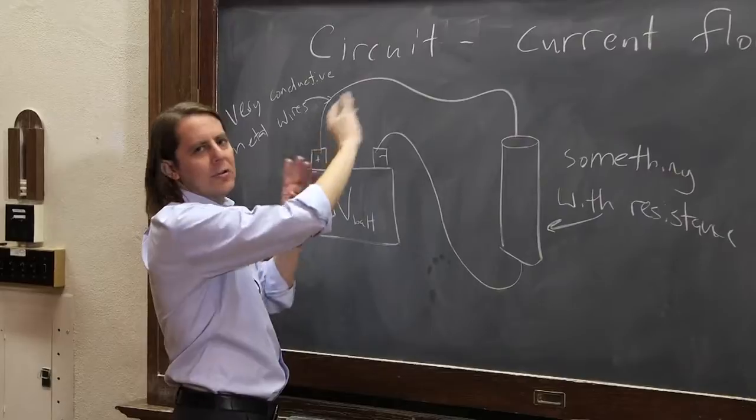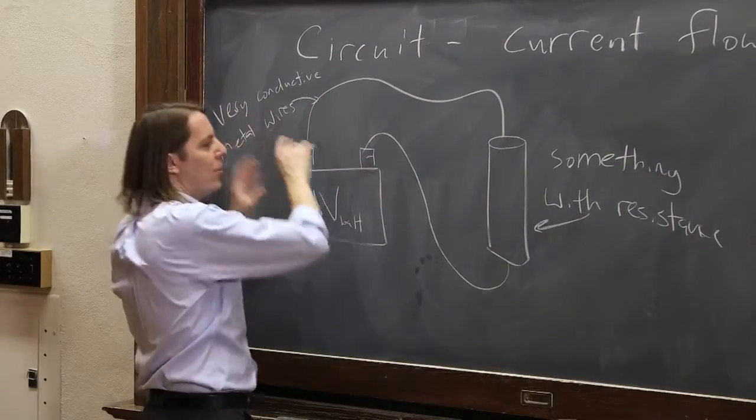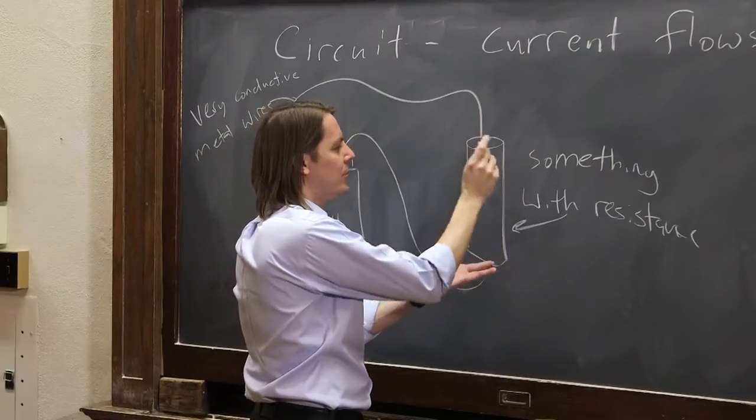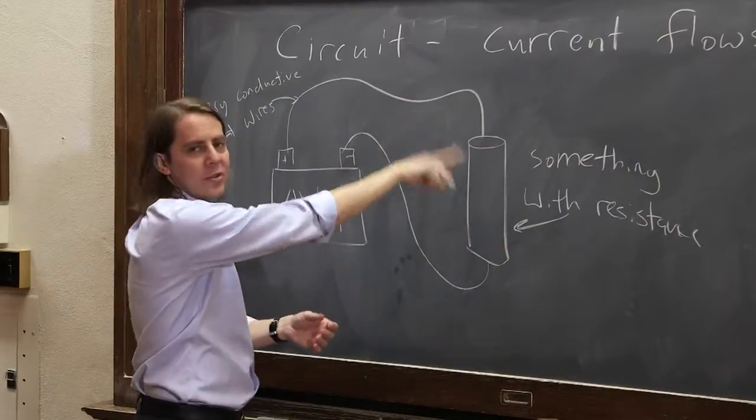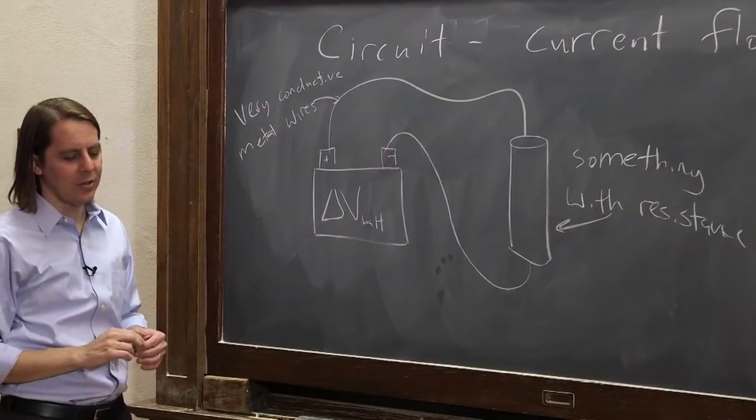There's no voltage drop. There's no electric field. You pretend they're just ideal little wires, because pretty much they are compared to this. This has some big resistance. These have essentially no resistance compared to that. So those are just sort of conduits. Think of them as ideal conduits.